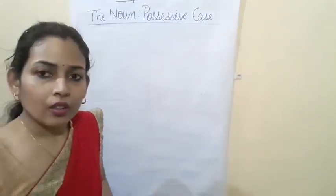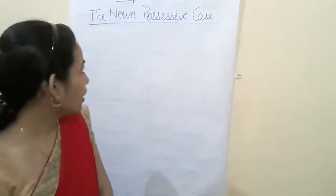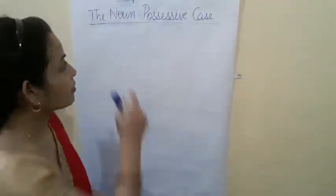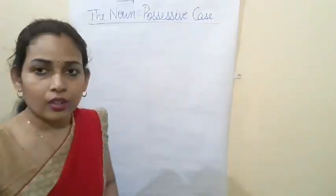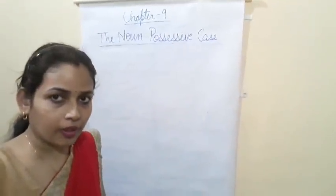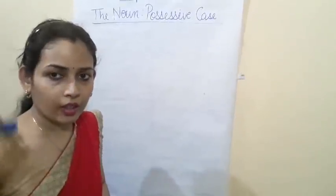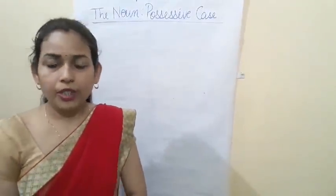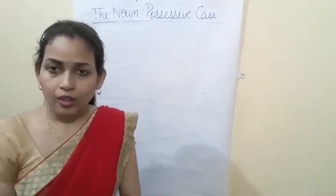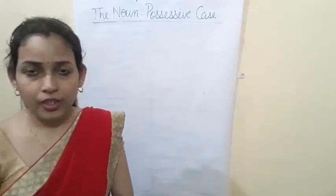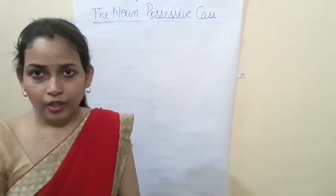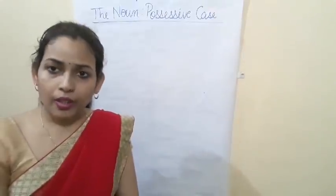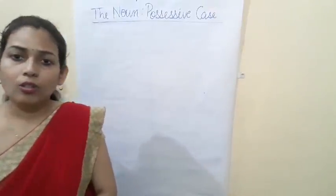Let's move to the next chapter — Chapter 9: The Noun Possessive Case. Possessive means ownership. When something belongs to someone, that is called ownership. For example, this pen belongs to me — this is my pen. When something belongs to somebody, that shows ownership.